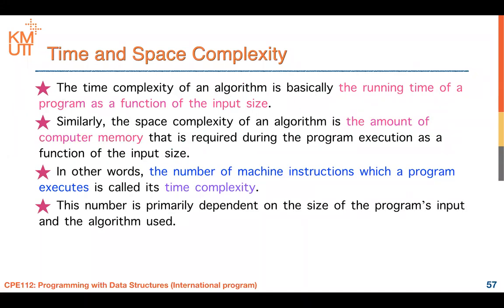When we talk about time complexity, the time complexity of an algorithm is the running time of a program as a function of the input size. It depends on the input size n. We describe it in terms of big O notation, written as O(n), where n is a function of the input size — for example, function of n, function of n squared, function of log n.